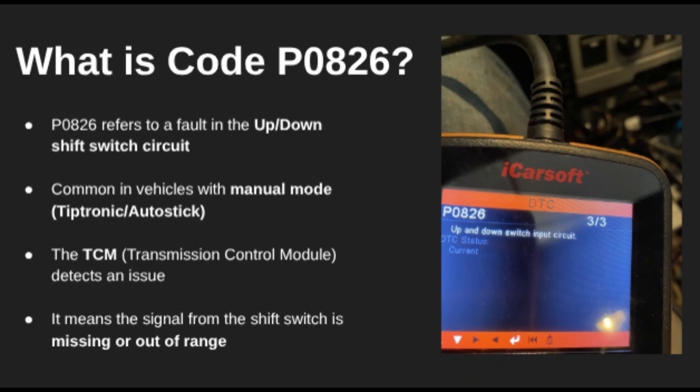Welcome back. In this video, we're talking about OBD2 trouble code P0826 — up and down shift switch circuit.